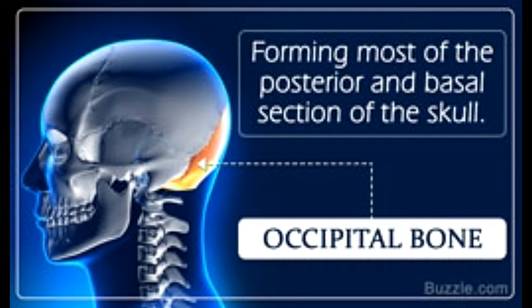The occipital bone is a trapezoid-shaped bone that forms the posterior wall and the base of the human skull. This video explains the anatomy, diagram, and function of the occipital bone.